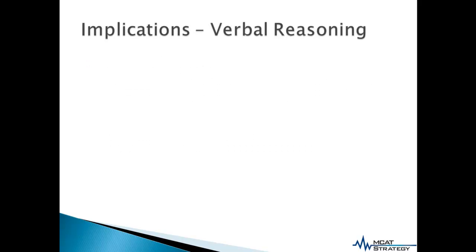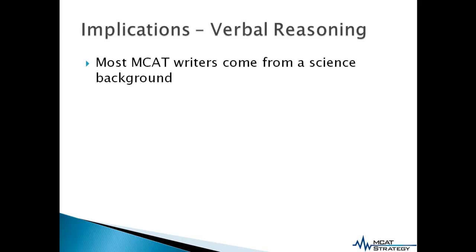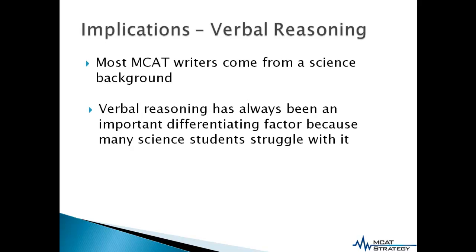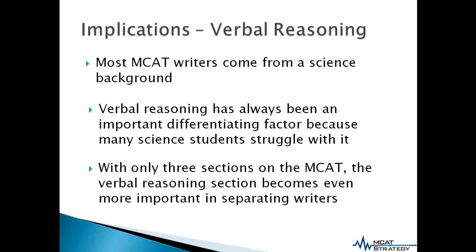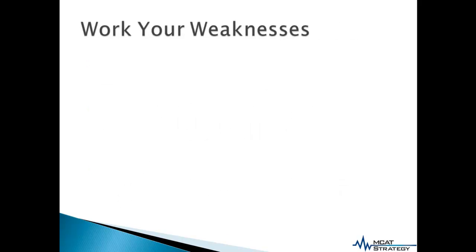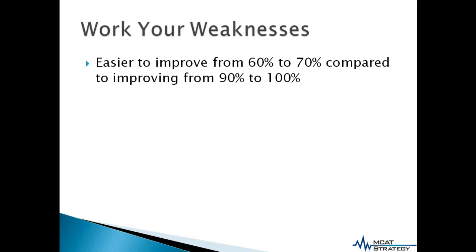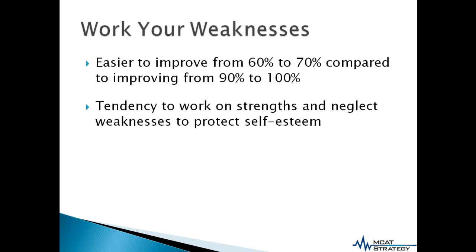This brings me to my next point about verbal reasoning. Most MCAT writers come from a science-based background, and the verbal reasoning section has always been an important differentiating factor because many science students struggle with it. With only three sections on the MCAT exam in 2013 and 2014, verbal reasoning becomes an even more important section in terms of separating test writers. One of the dangerous tendencies for students preparing for the MCAT is to work on their strengths and neglect their weaknesses in order to protect their self-esteem.